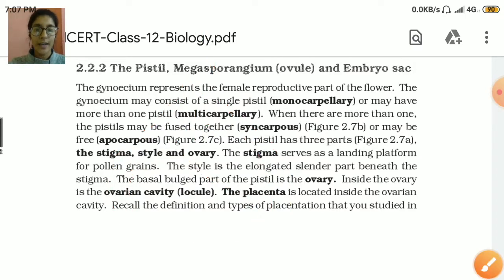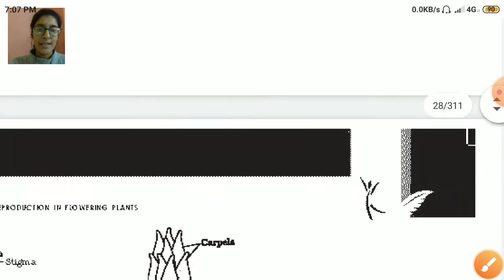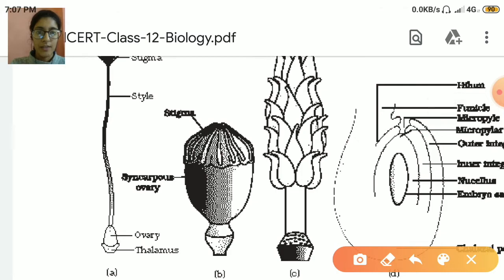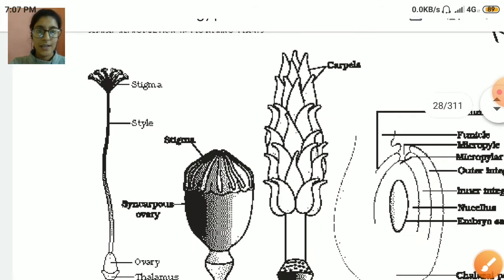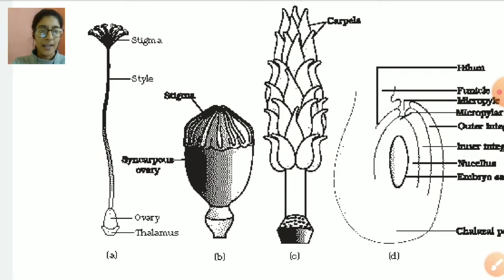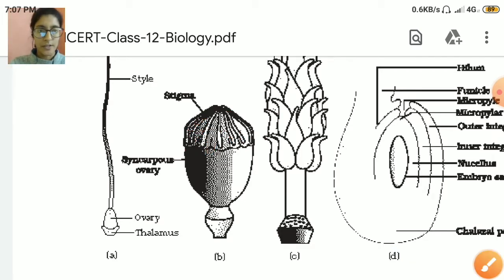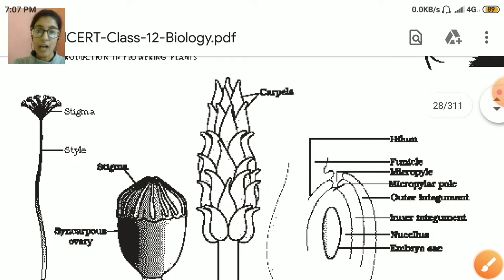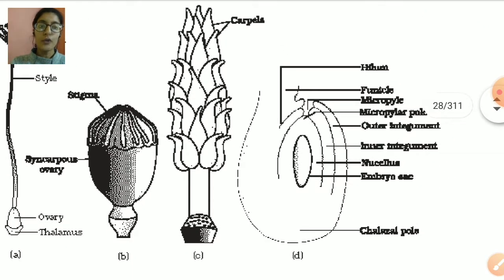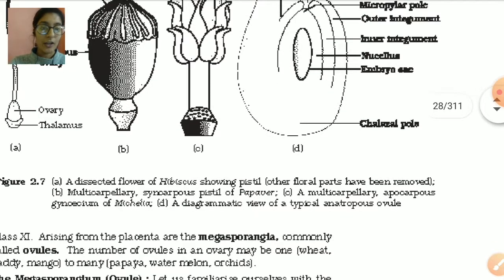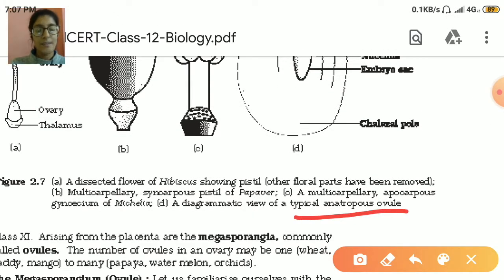We all know placenta is a temporary connection between the ovary and the fetus — fetus ke saath ovary ka jo connection hota hai usko hum placenta kehte hain. You can see here there is a diagram — this is of pistil. The diagram B is of syncarpous pistil and multicarpellary syncarpous pistil, where many carpels and pistils are there and all are fused. Whereas C has many carpels or pistils present which are not fused — alag-alag hain. After fertilization, the ovule is formed, and it is the basic anatropous ovule.